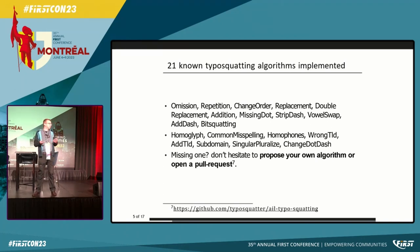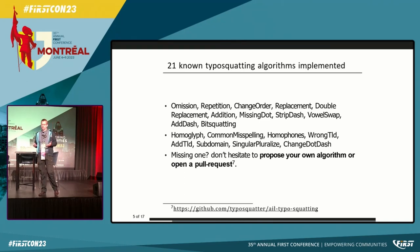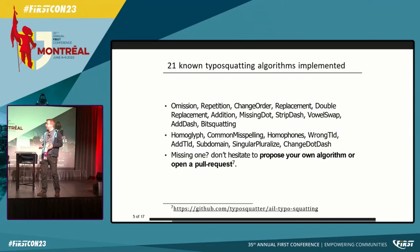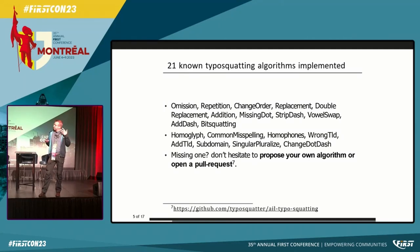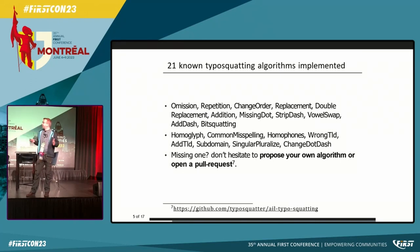Then you have more advanced ones like homoglyphs — very well known when using Unicode — localized content for domains, libraries of common misspellings that humans make which are actually recorded in databases, and homophones used for phone scamming but also interesting in documents. Wrong TLD is a classical trick — a bank in Luxembourg ending up in Germany. Adding subdomains, additional TLDs — that's the classical set we implemented.